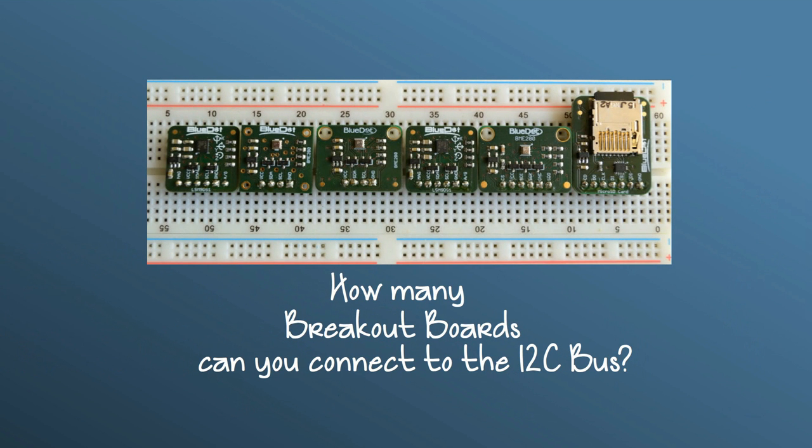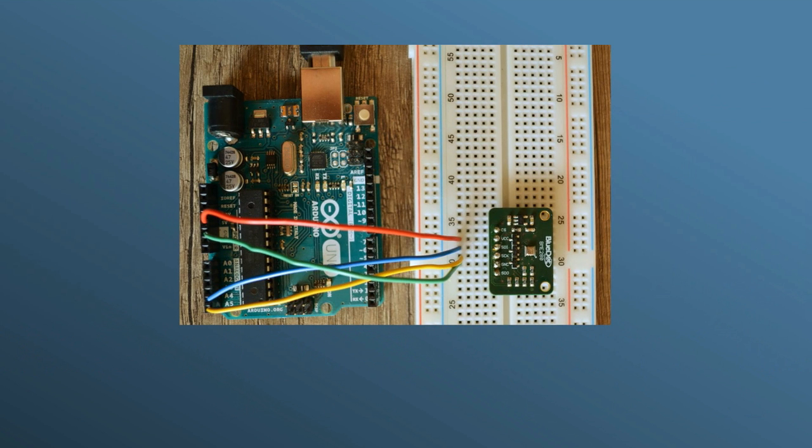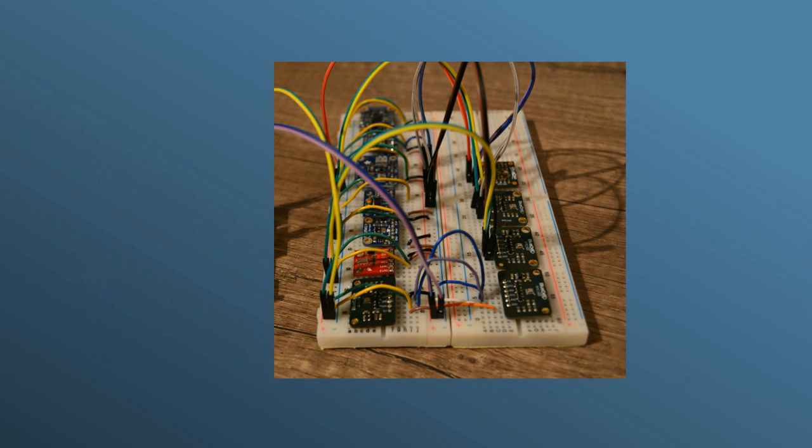Okay, so back to the question, how many breakout boards can you connect to the I2C bus? Well, it depends on the breakout boards you have. Breakout boards are so easy to use, because they already contain pull-up resistors. Most breakout boards seem to have resistors ranging from 2.2 kilo-ohms to 10 kilo-ohms.